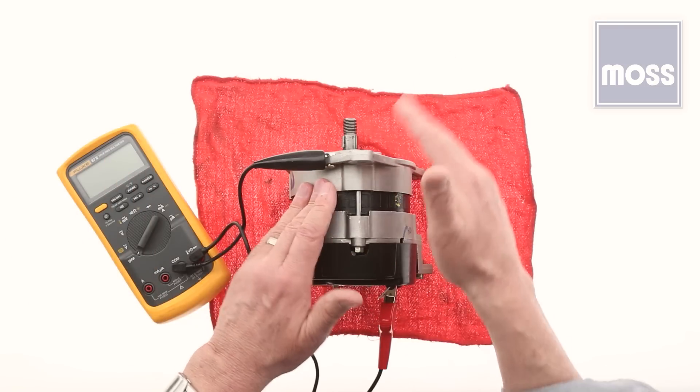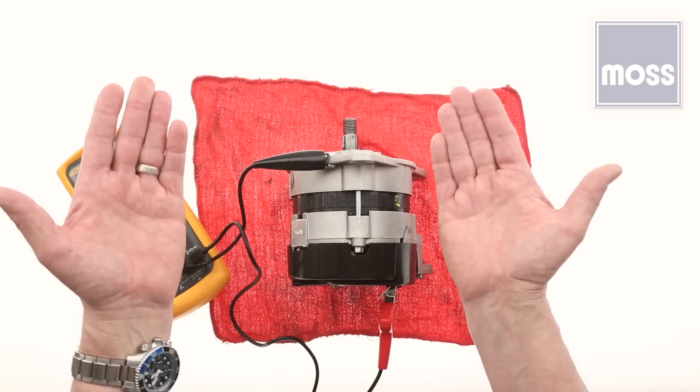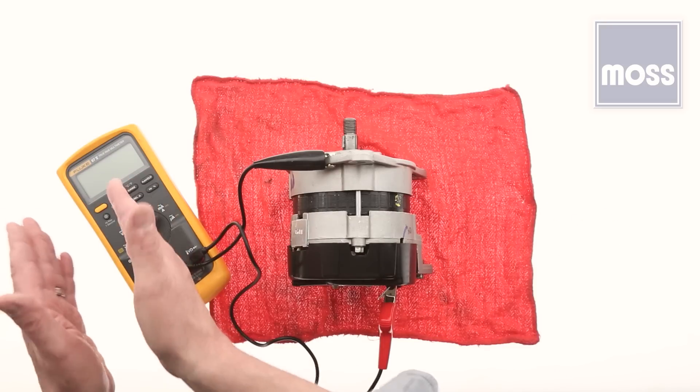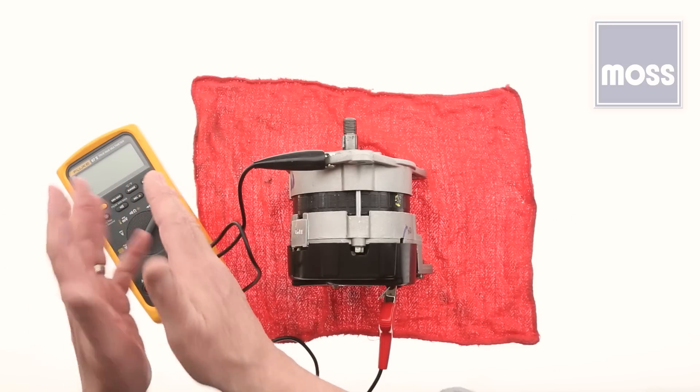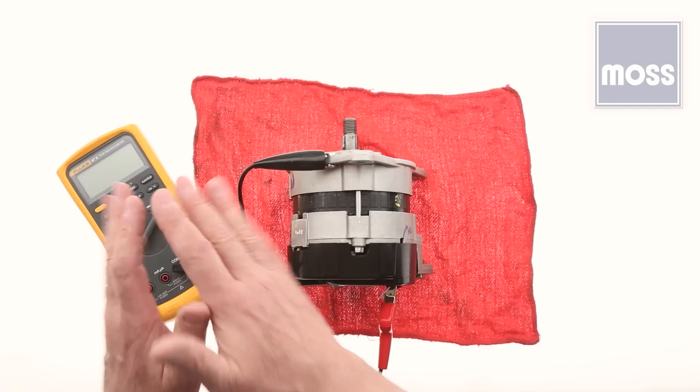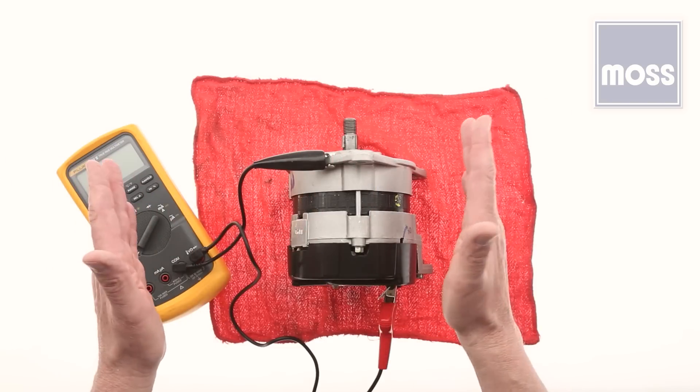Now start the car. Bring the RPMs up to around 1500 revolutions per minute. The meter should be reading in the 13 volt range to the 14 volt range. If it does, it's fine. It passed the test.